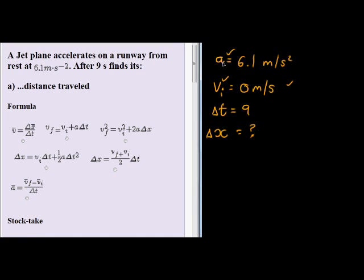So let's see which equation has A, VI, delta T and delta X. There we have A, VI, doesn't have delta X, so not going to be that one. That one has delta X. This one doesn't have delta X. This one has delta X.